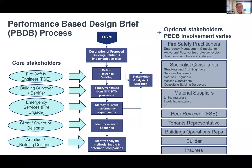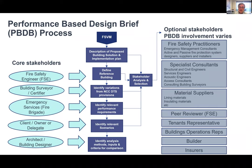The issues addressed during the brief include: description of the proposed building solution and the implementation plan — which is critical, as the building has to be buildable and comply. You define the reference building and identify variations between it and the DTS provisions. You identify relevant performance requirements — all currently required by the NCC, but the process is better defined in the FSVM. You identify relevant scenarios — with a helping hand — and identify analysis methods, inputs, and criteria. The FSVM is quite open about analysis methods and not overly prescriptive, but the use of those methods should be justified.